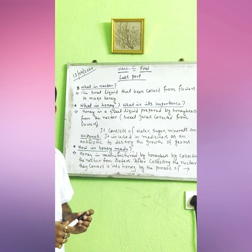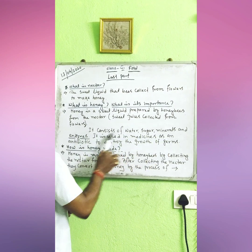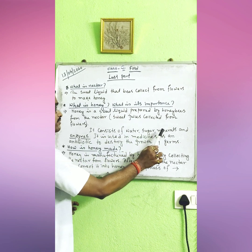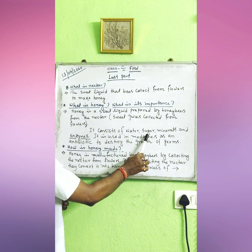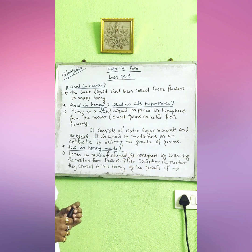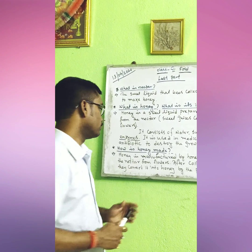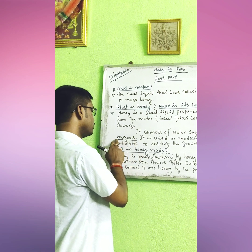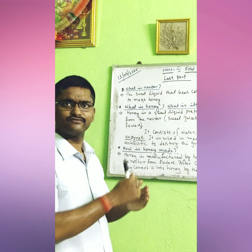Honey consists of water, sugar, minerals, and enzymes. You know about water, sugar, and minerals, but enzymes is a totally new term for Class 6. I will explain this term specifically after a few minutes.